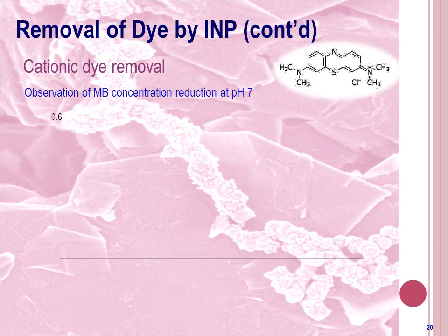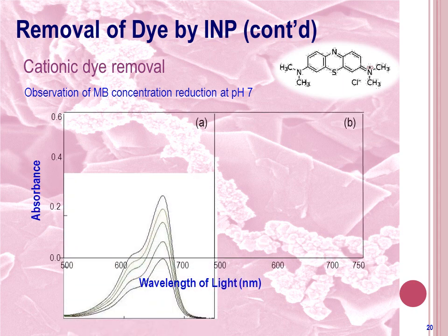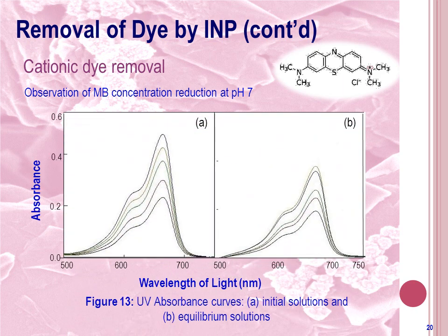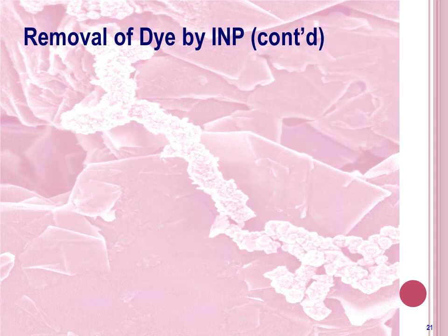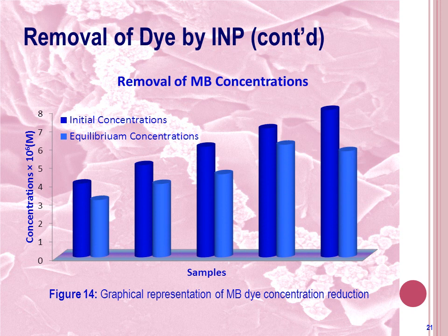In the case of treating cationic dye, dye concentration reduction was observed at pH 7. The absorbance curve from UV analysis for the initial and equilibrium solution shows reduction of dye concentration. At this pH range, INP possesses a negative surface charge which can easily attract positively charged methylene blue. The dye concentration reduction can be represented by a bar chart where an average of 25% methylene blue concentration reduction is found.